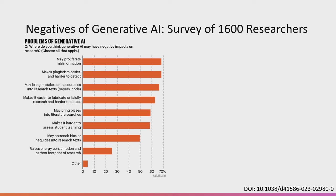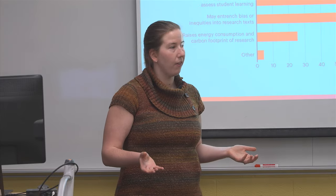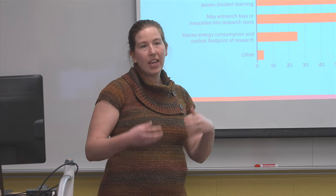Other problems that came up were making plagiarism easier and harder to detect, and bringing false information into both research and teaching. AI leads to reliance on pattern recognition without understanding — you recognize patterns in the data but don't understand what they mean, and you're not able to synthesize the data the same way. These generative AI models are also trained on a fixed set of data, so they don't know things outside that initial dataset, which partly contributes to the misinformation problem.